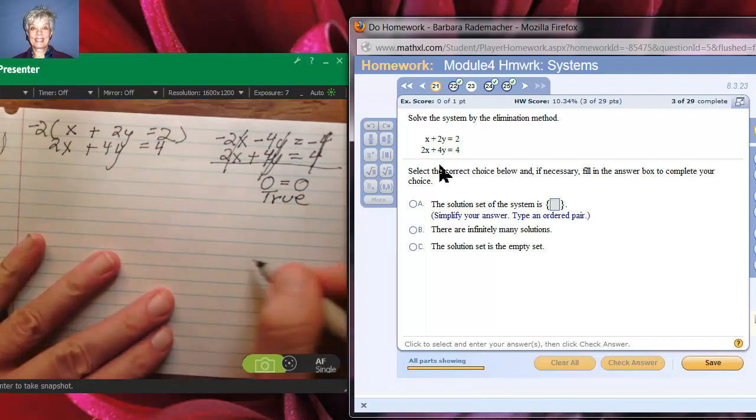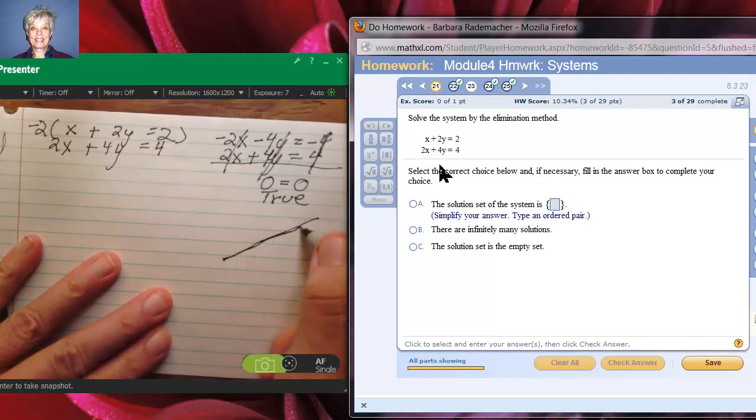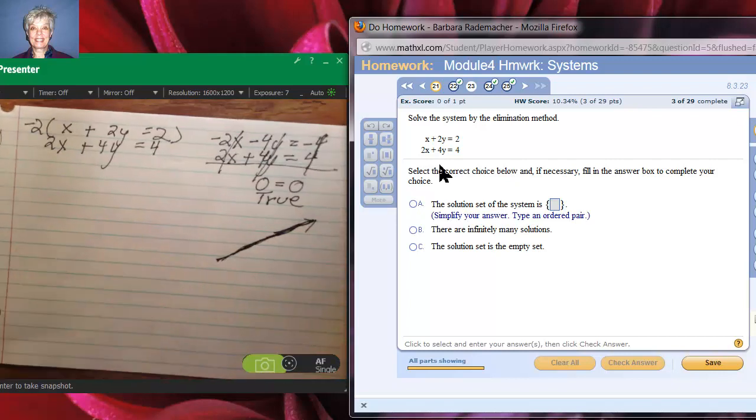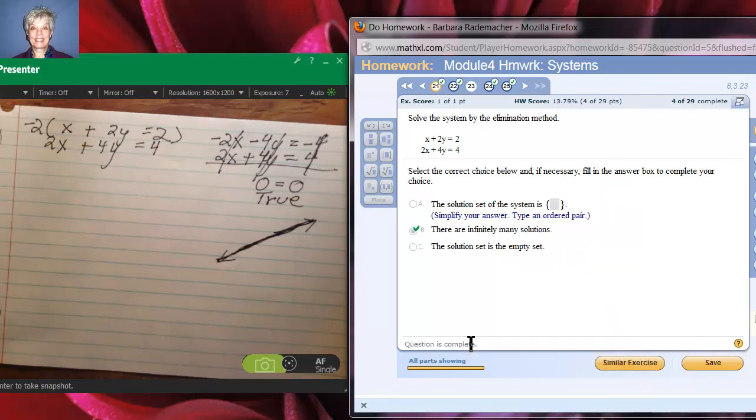This is one of those systems where you have one line laying on top of the other line. They touch everywhere, so there are an infinite number of solutions. We call this a dependent system. So I will click right there and check answer, and we did it.